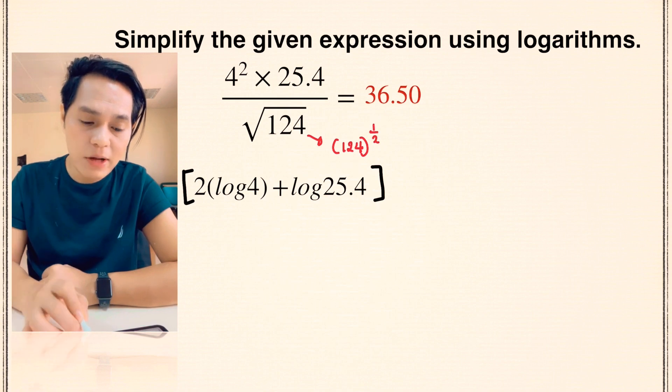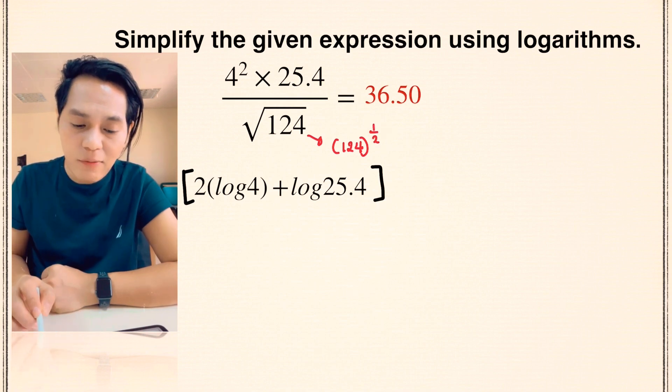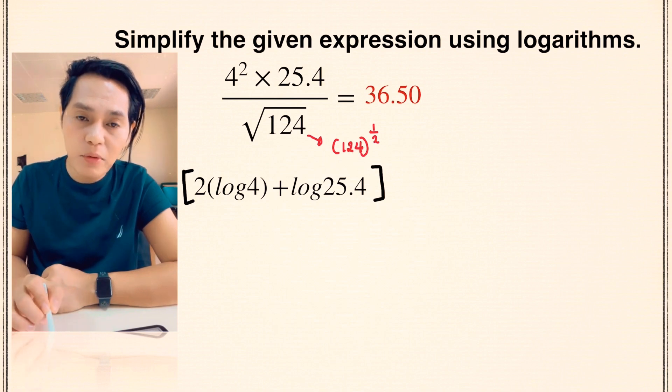Remember this radical expression. So this is represented in an exponential form to the power of 1 half. So in that case we are just going to get the log of 124, the base, and then we're just going to multiply the exponent which is 1 half.